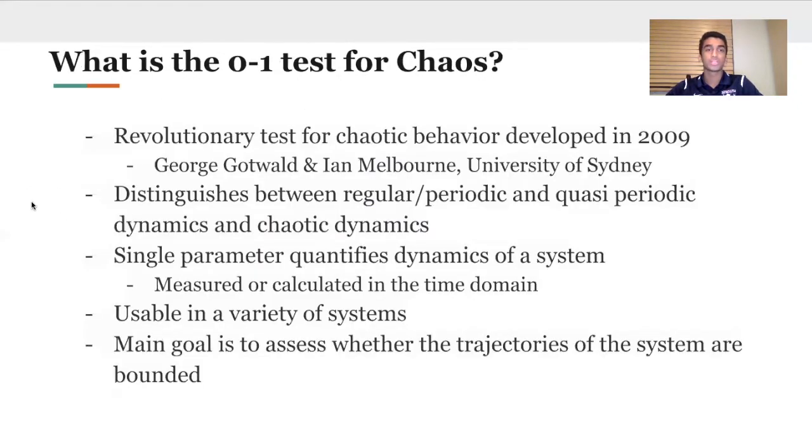So what is the 0-1 test for chaos? The 0-1 test for chaos is a new revolutionary test for determining chaos. As we'll see, other methods are very cumbersome and difficult to implement. This is a very easy test to implement and it can determine chaos with great sensitivity, while also being able to ignore noise, which is very useful.